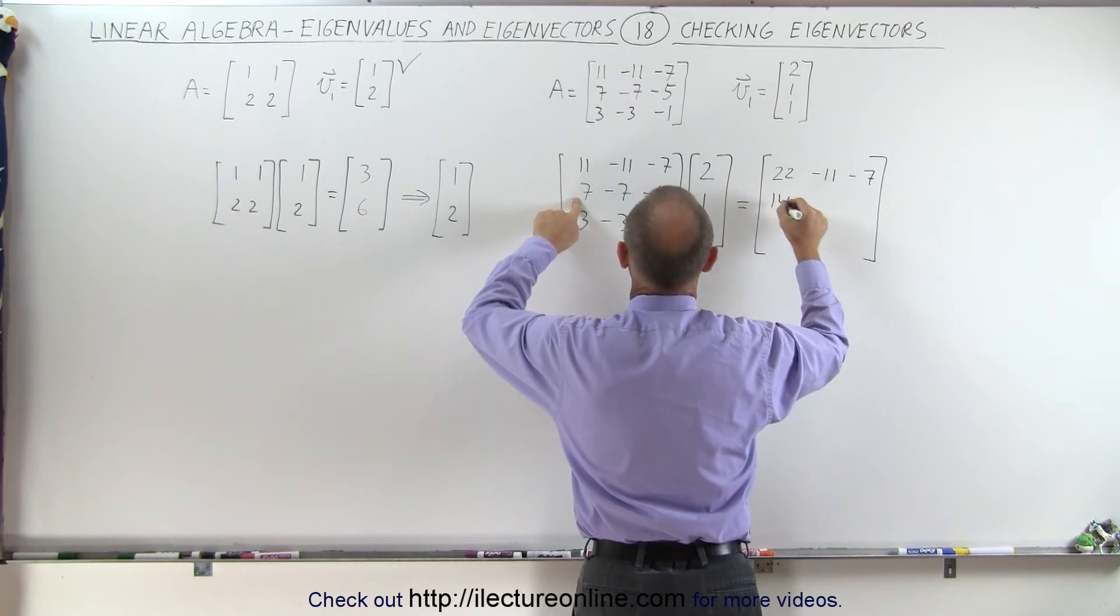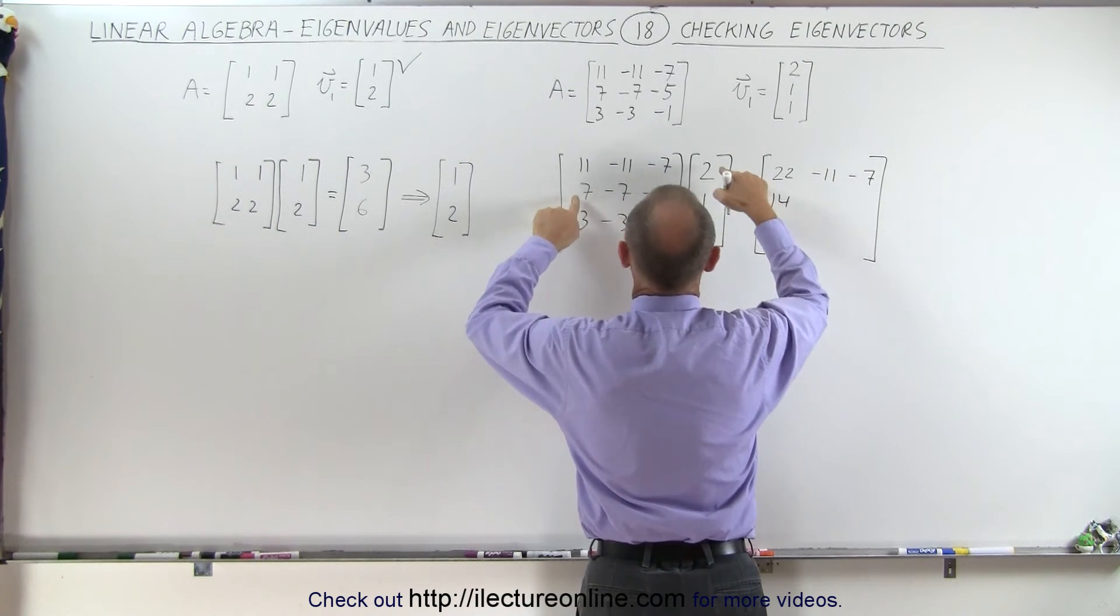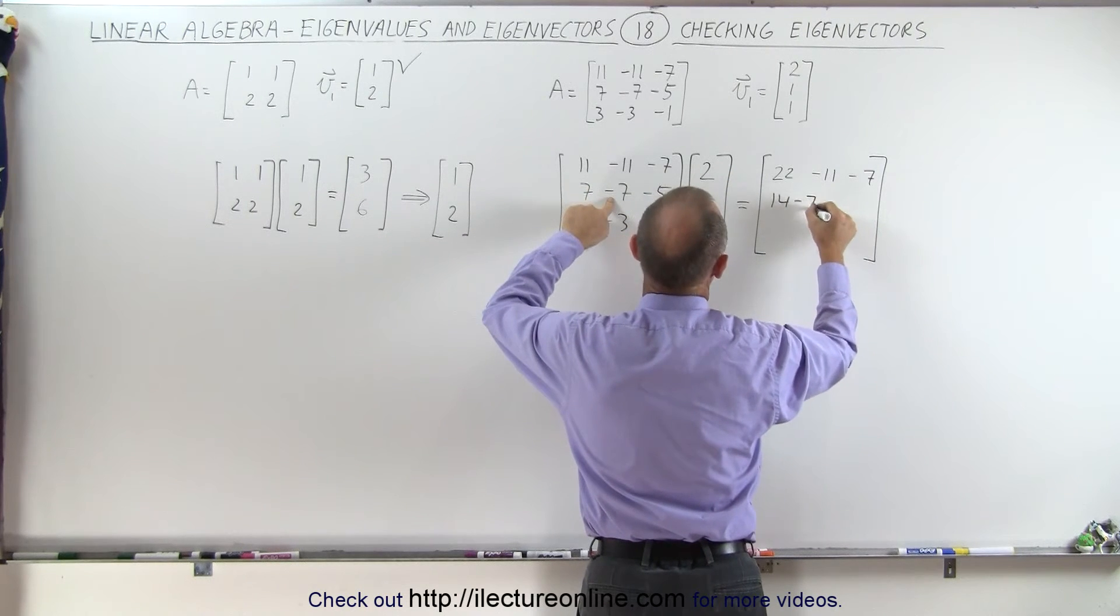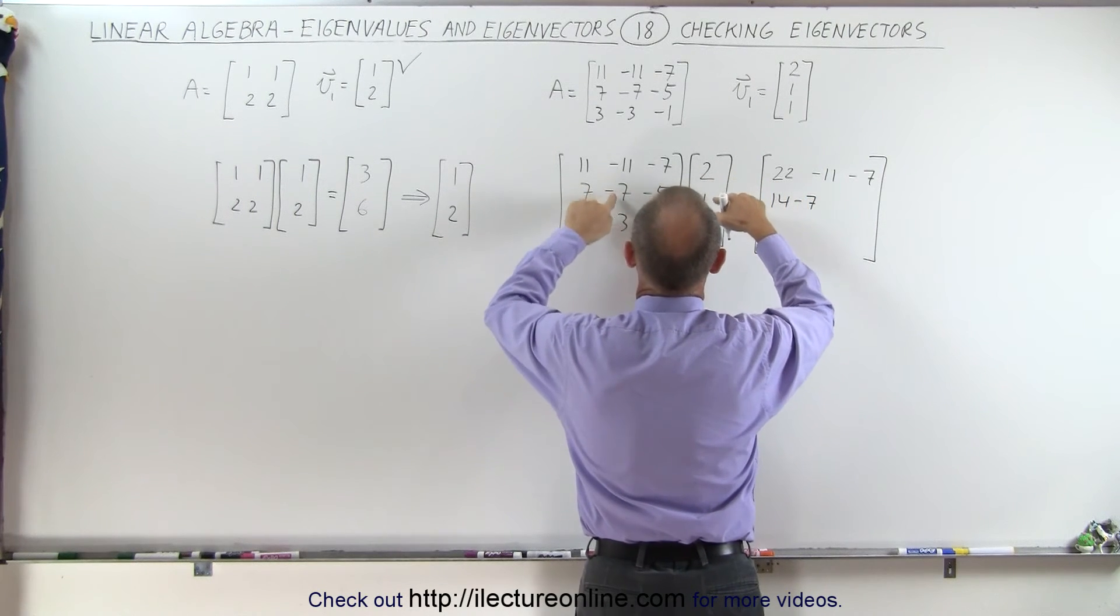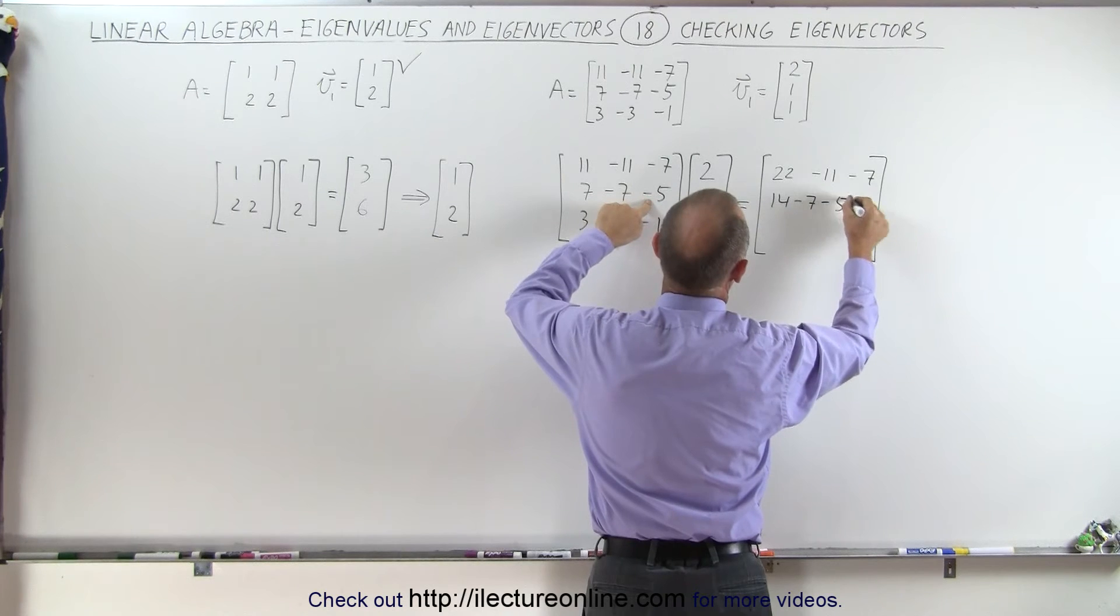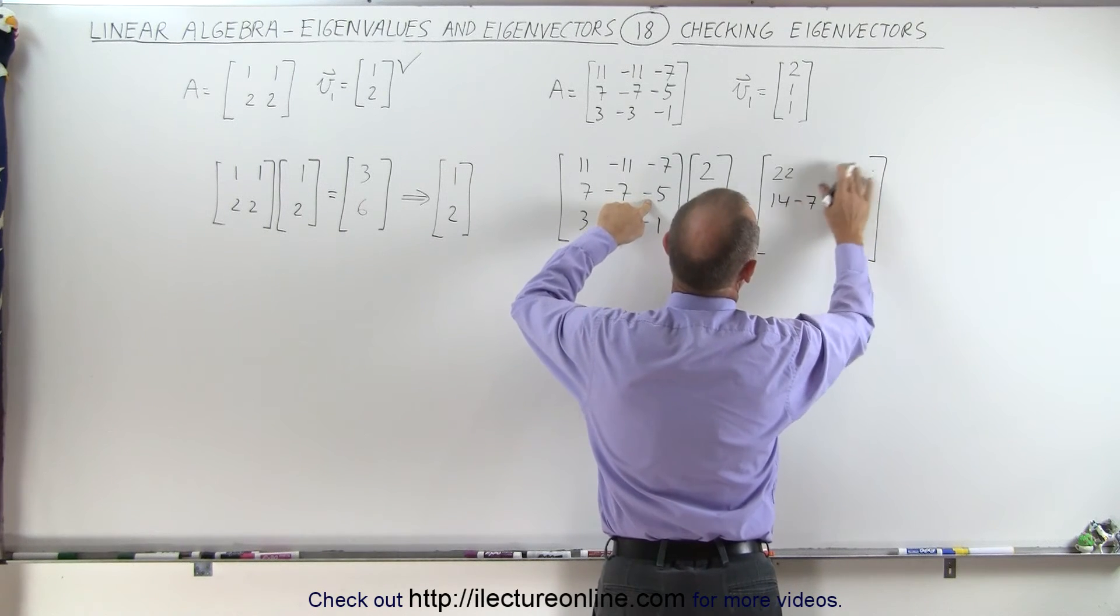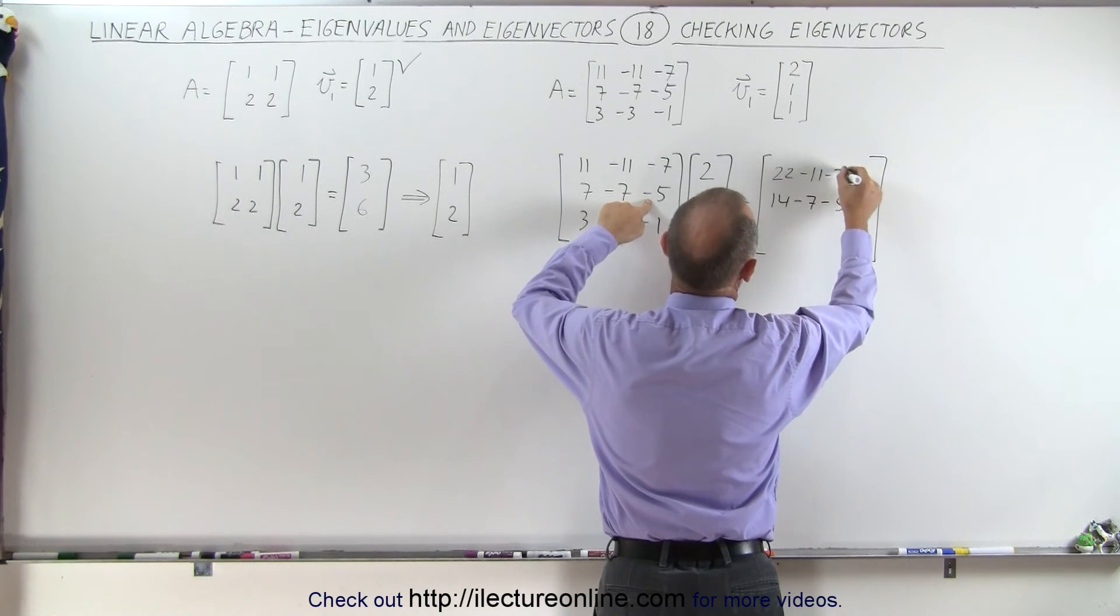So we have 14 minus 4, oh sorry, 14 minus 7 and minus 5. I'll write these a little bit closer together so you can see that they're actually one element, right, like this.